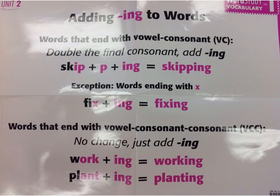Remember to look at your Unit 2 word study poster to review the rules about adding ING to words. Words that end with vowel consonant: we double the final consonant and then add ING. There is an exception — words ending with X, we just add ING. Words that end with a vowel consonant consonant: we do not change anything, we just add ING.